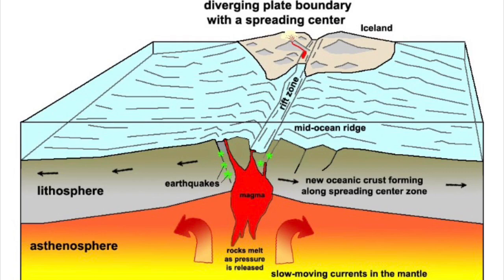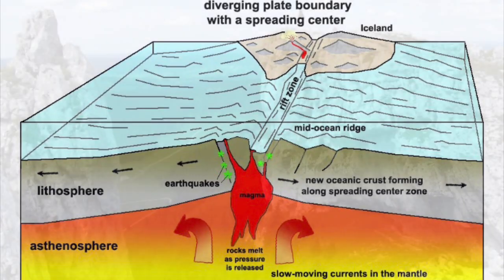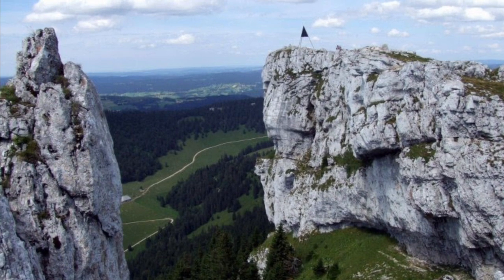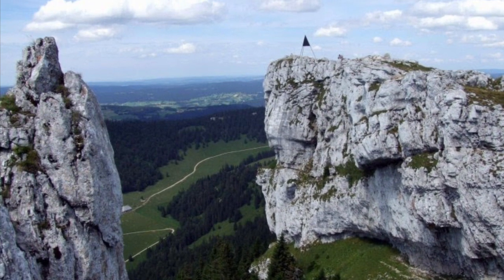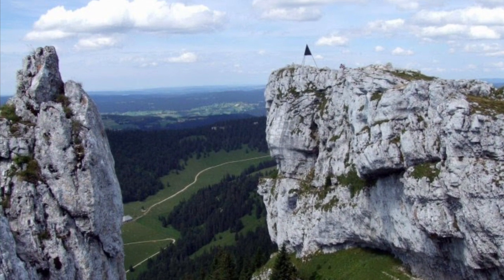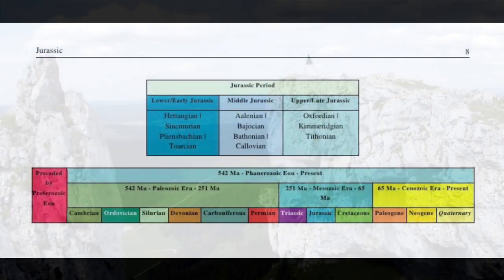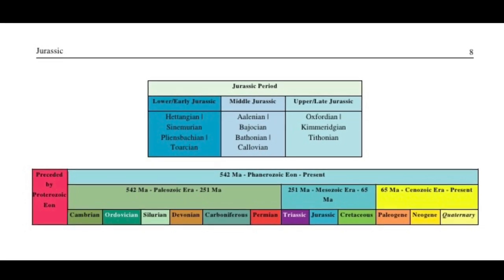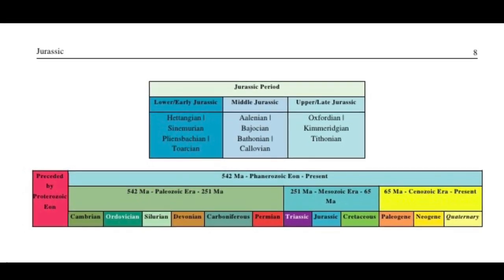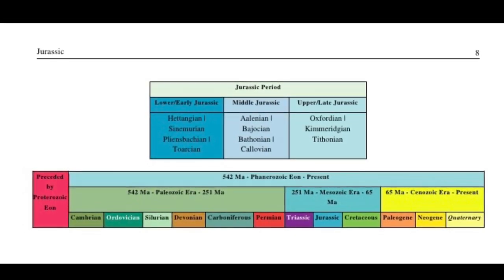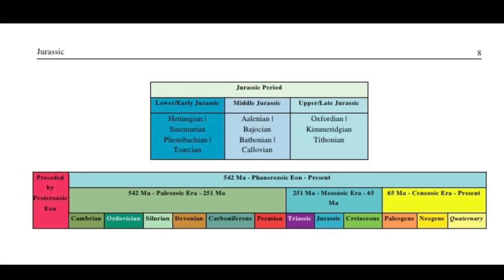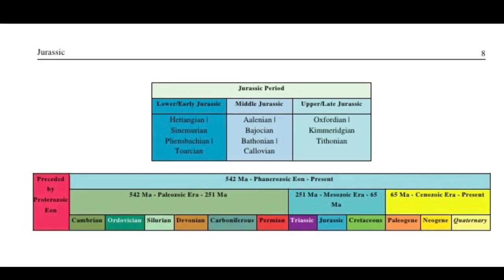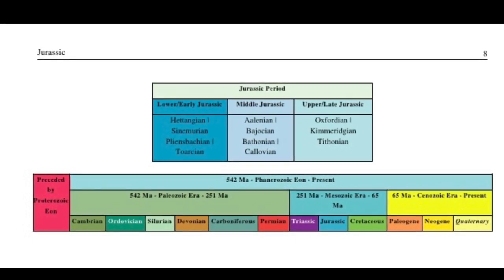The Jurassic name comes from the Jura mountains on the border of France and Switzerland. The Jurassic period is divided into three parts: Lower Jurassic, Middle Jurassic, and Upper Jurassic.